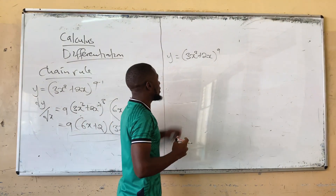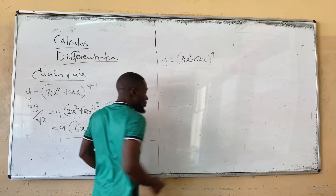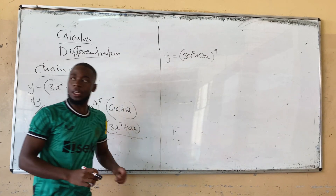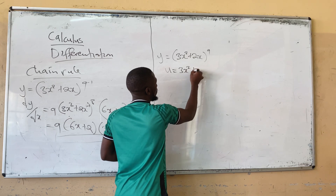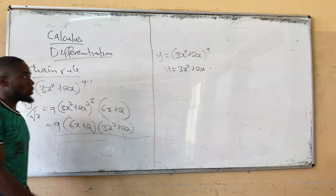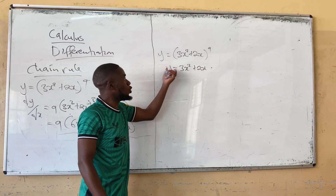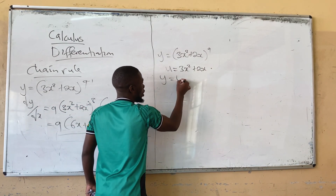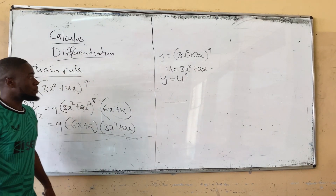The formula method: let the complicated part — what is inside the brackets — be equal to u. So let u equal 3x squared plus 2x. Meaning this equation, when we replace that part with u, becomes Y equals u to the power 9.